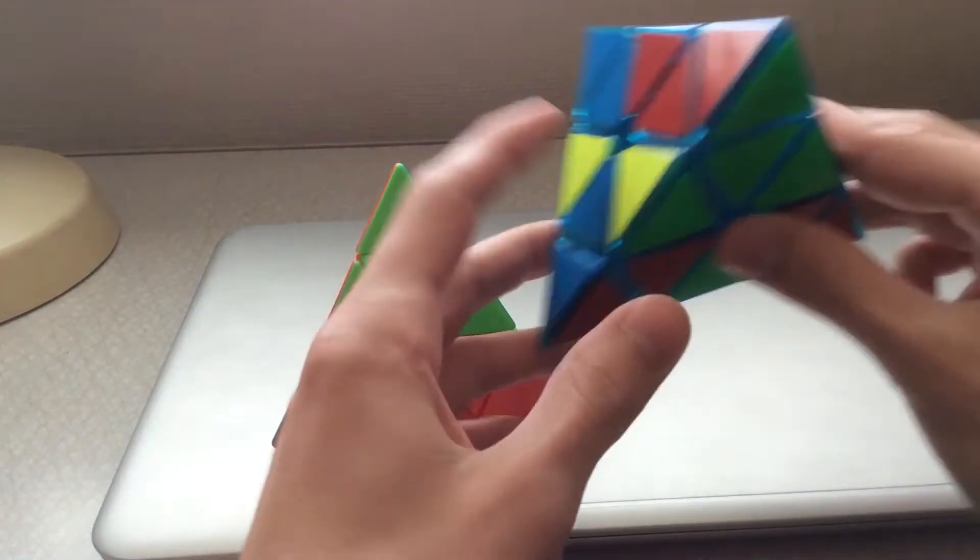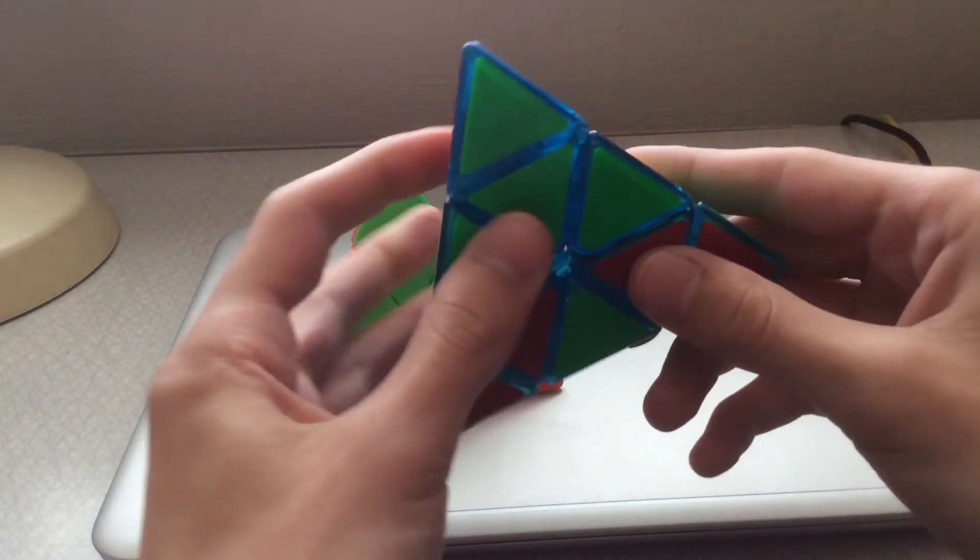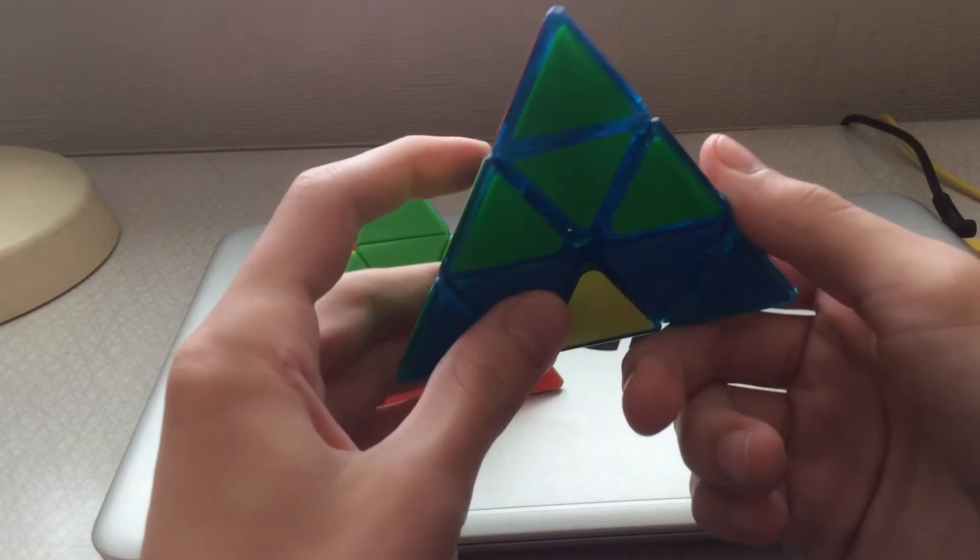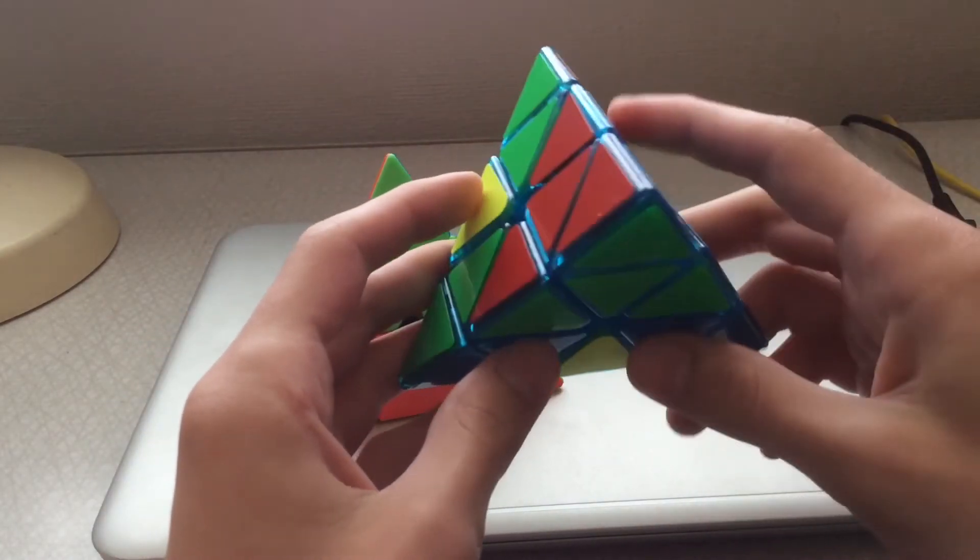Yeah, and this one when it's on the right and these are the same colors, you'll make sure to hold this one on the right and do R 2 prime L R L prime R. And then it's done.